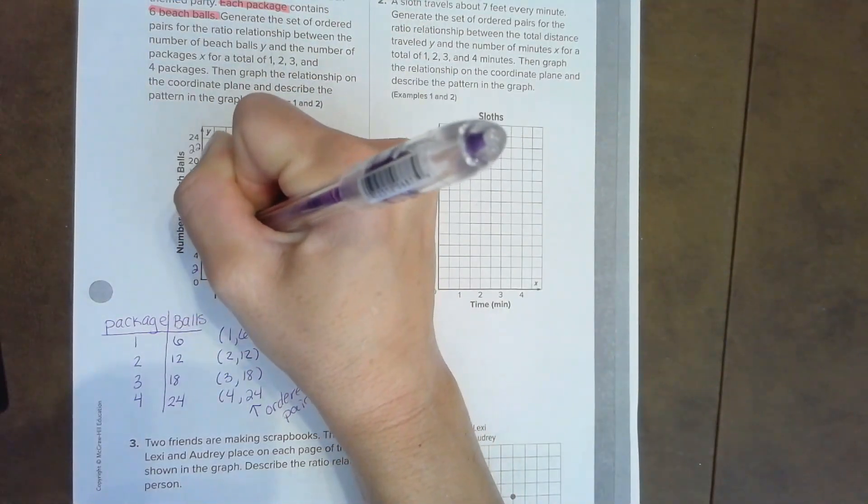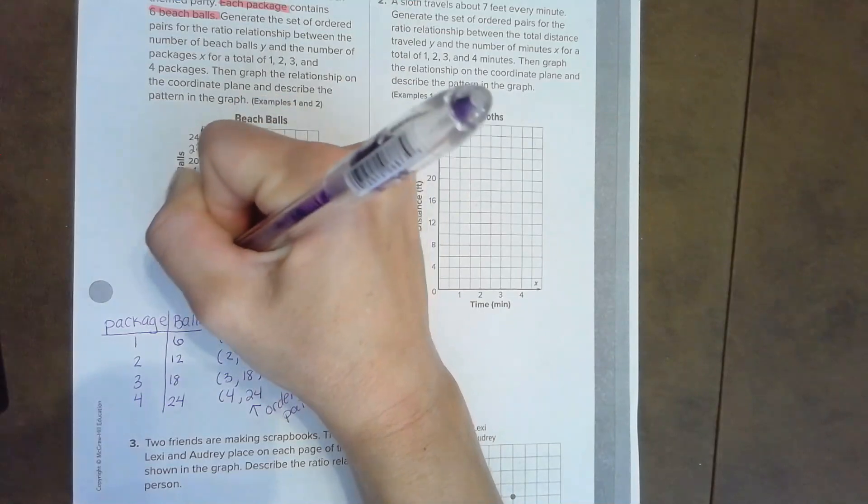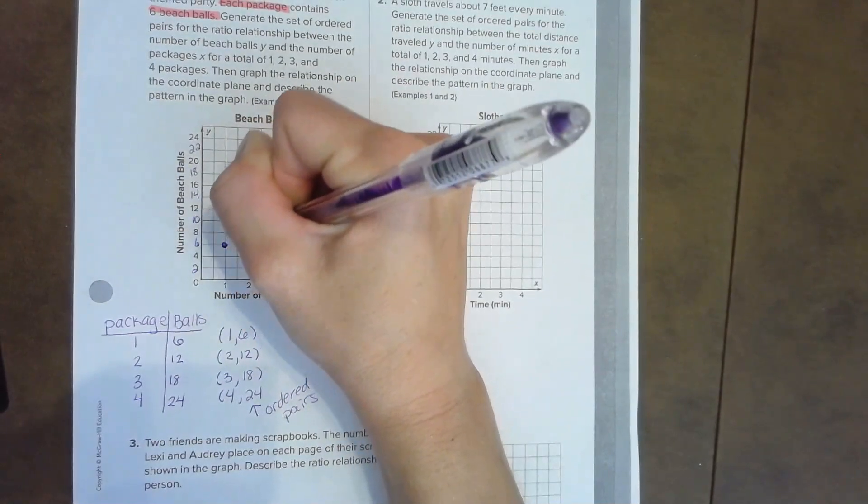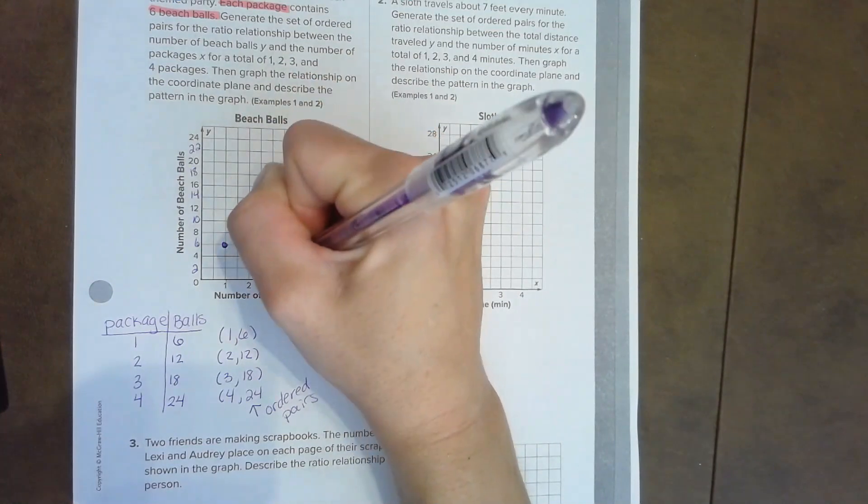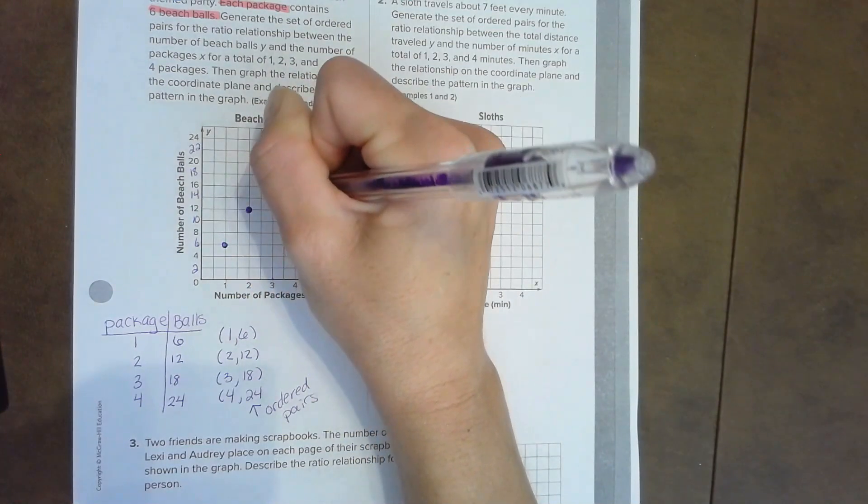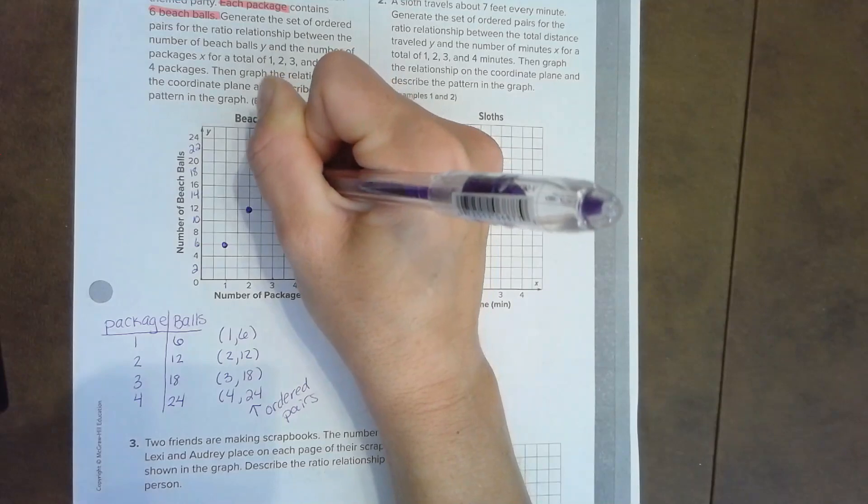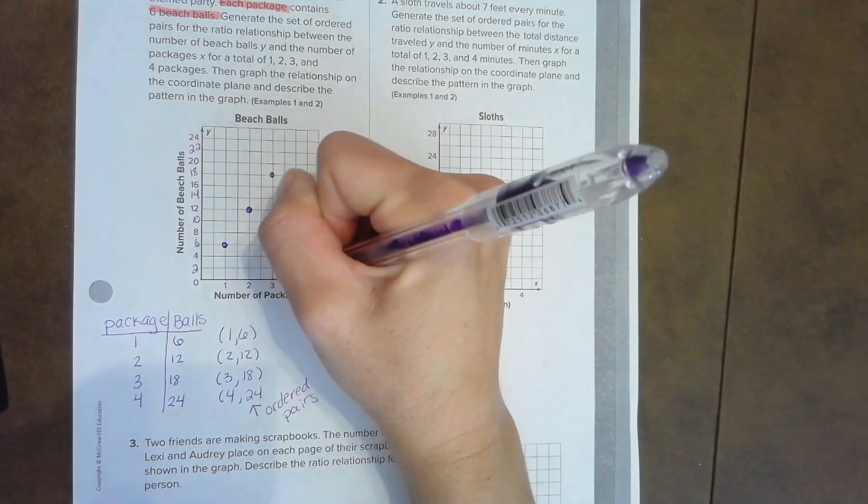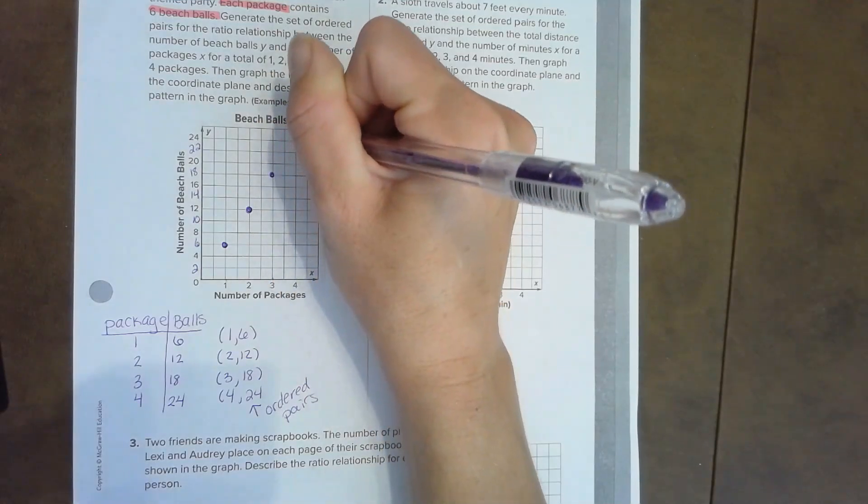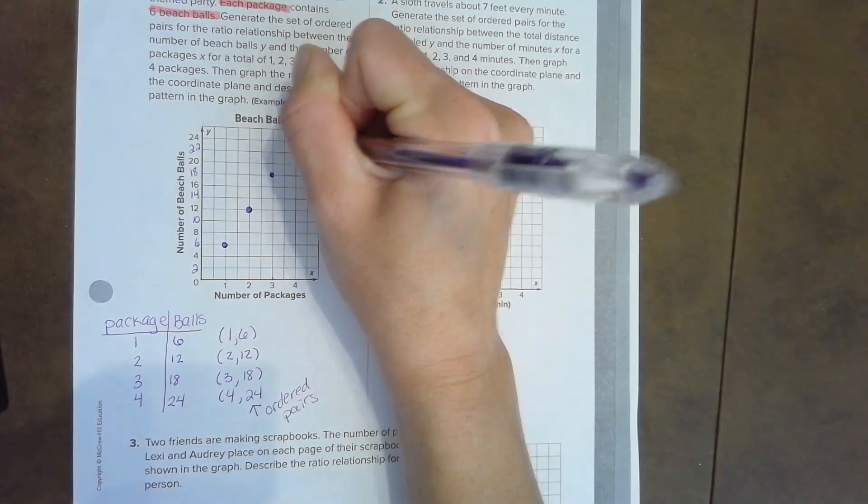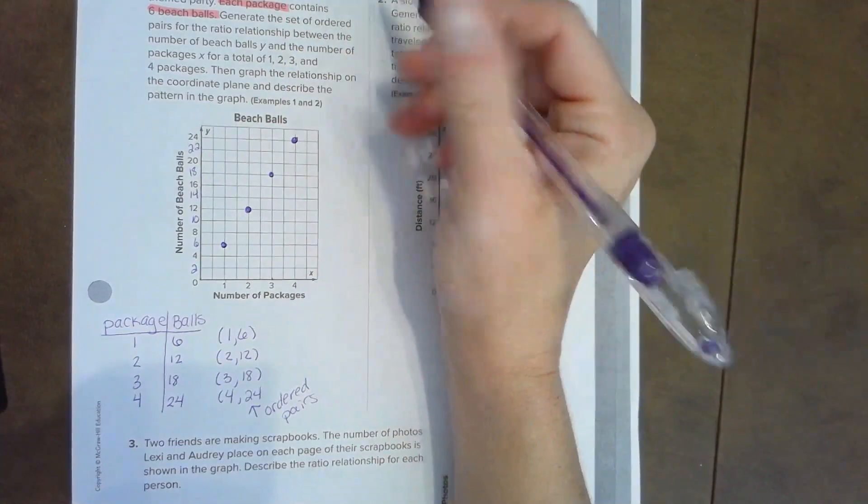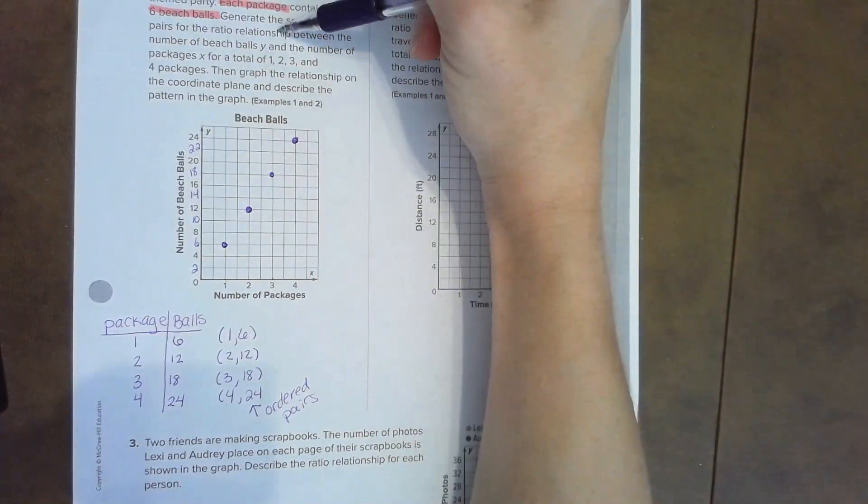We start at the origin, we go over to one and up to six. Plot the point. Over to two, up to twelve. Over to three and up to eighteen. Over to four, up to twenty-four.